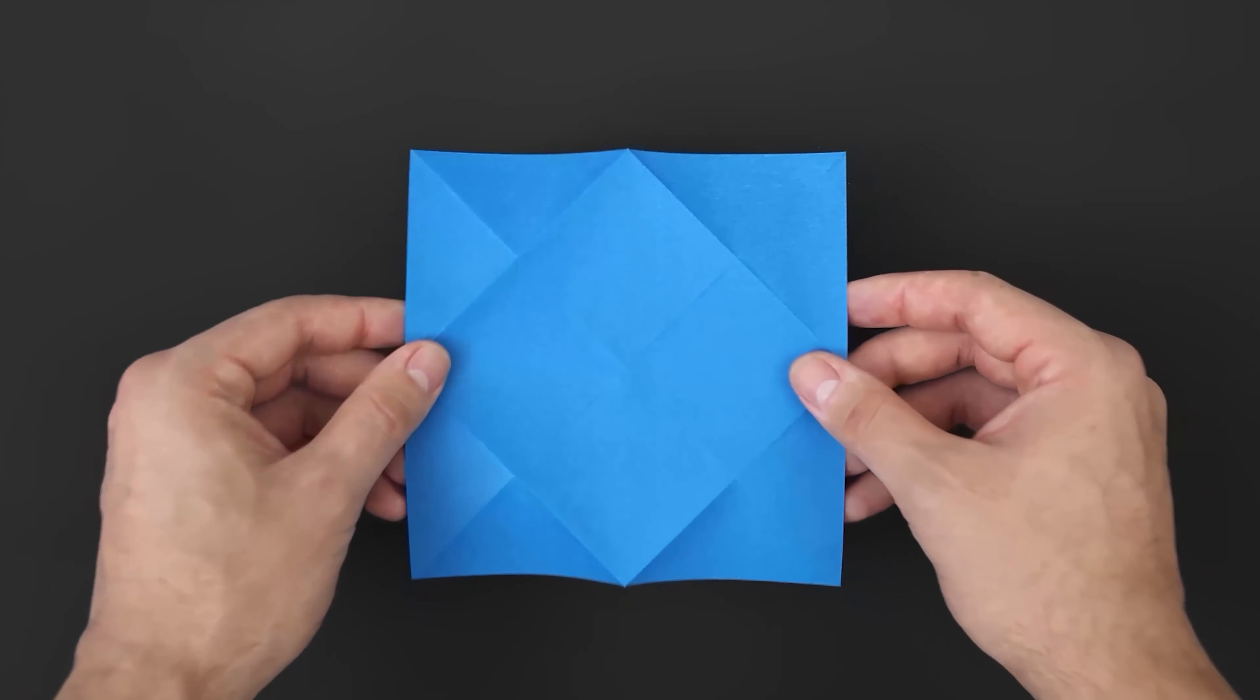As the last step we need to fold the corner here, making it straight with the edge of the triangle. Unfold. And using these new marks, let's open this part. And now we have a kind of petal that makes spinning easier when blowing on it. Let's do the same with the other two.